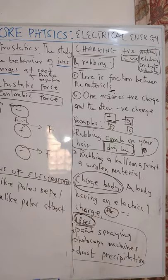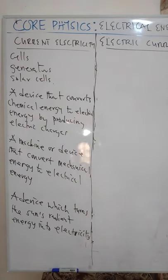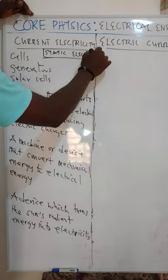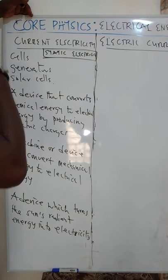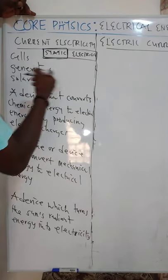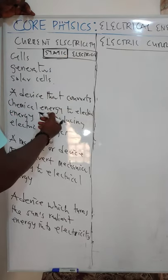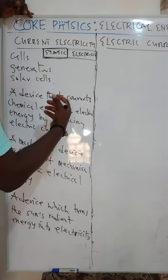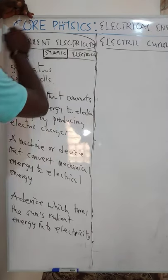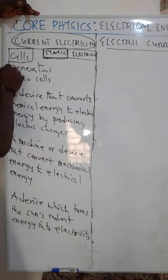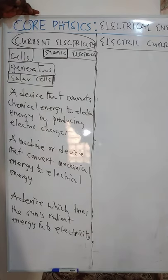Let us move away from here and talk about current electricity. Initially we were talking about static electricity, but the main purpose of electricity is to provide enough current for us to use in our homes to power our electrical gadgets. Static electricity cannot provide enough flow of current, so we need what we call current electricity. Examples of sources include cells or dry cells, generators, and solar cells.